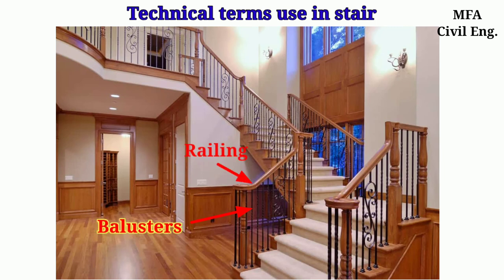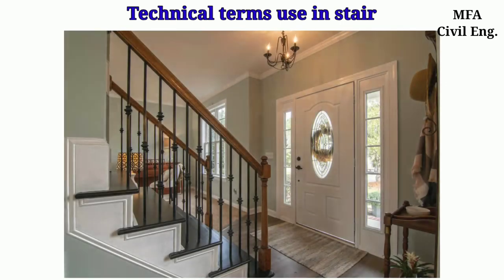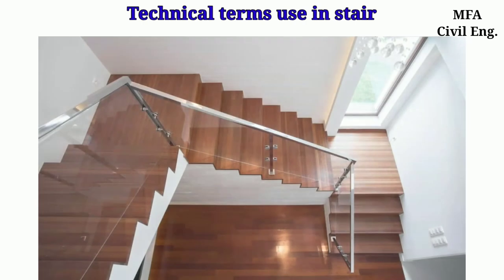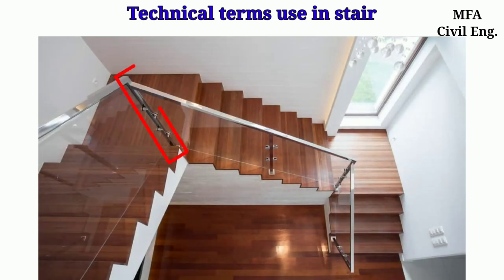The composite member consisting of a handrail, balusters, and newel post is called the balustrade. The principal baluster used at the top and bottom of the flight is called the newel post.